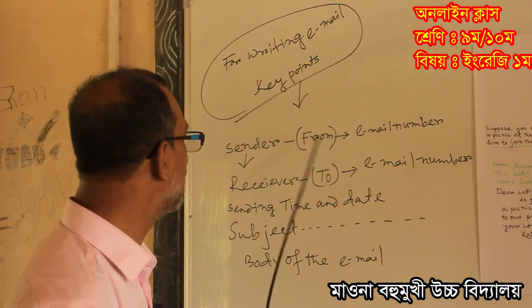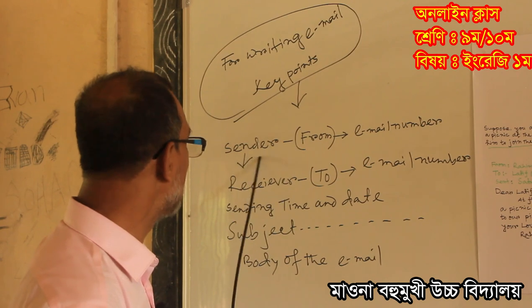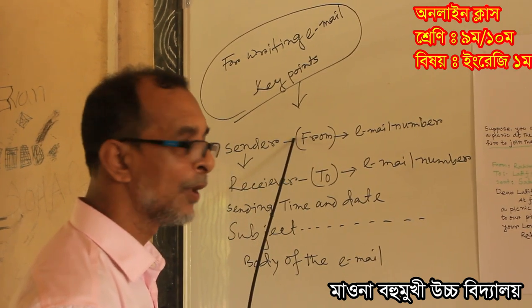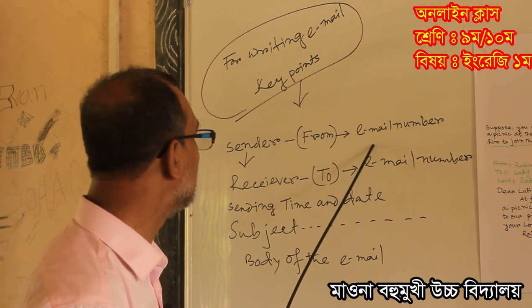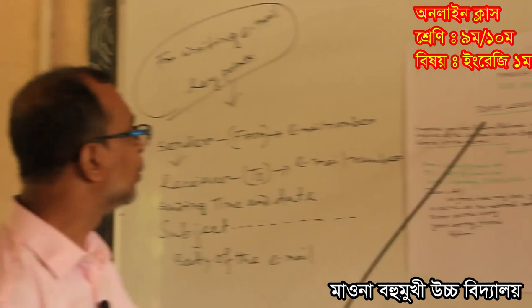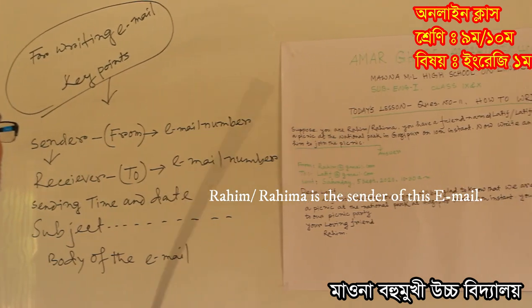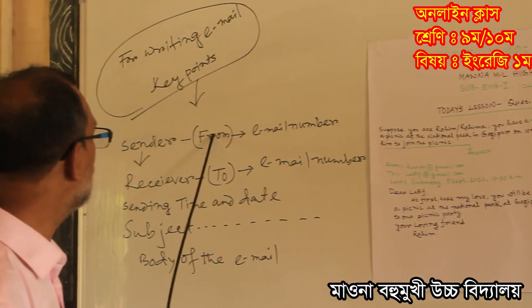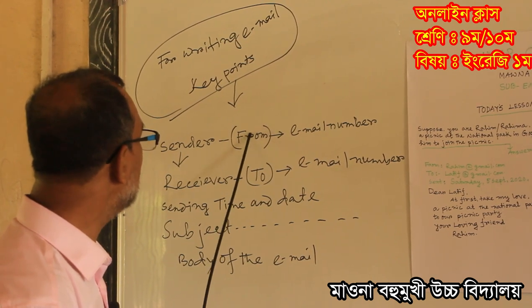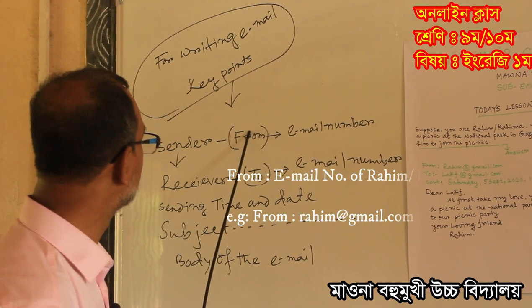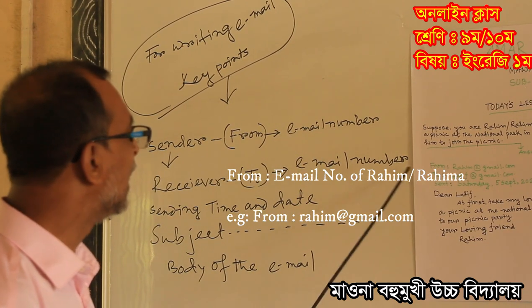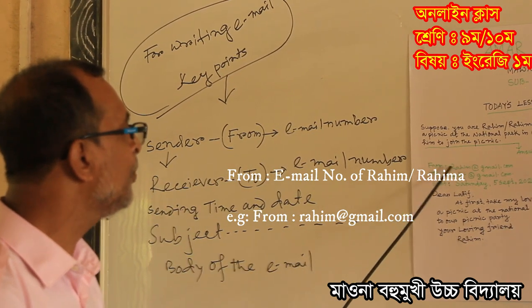Now, for writing an email, some key points and the method are given. First of all, the sender — the one who will send the email. Here in the question, Rohim is the sender. So the first field is 'From': Rohim at gmail dot com.